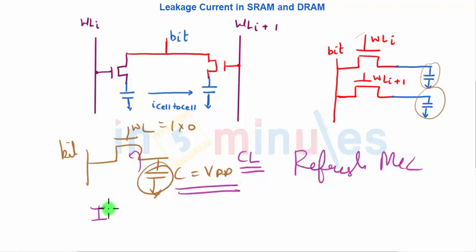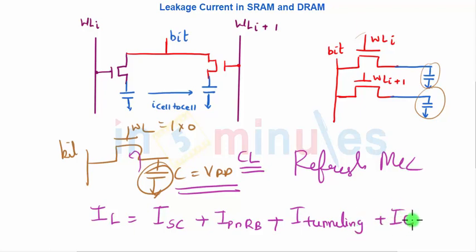Now, what all contributes to leakage current in case of DRAM? Very similar—again, when the transistor is off, we have subthreshold current, PN junction reverse bias diode current, then we have tunneling current, and one more additional which we have is I_cell-to-cell current.